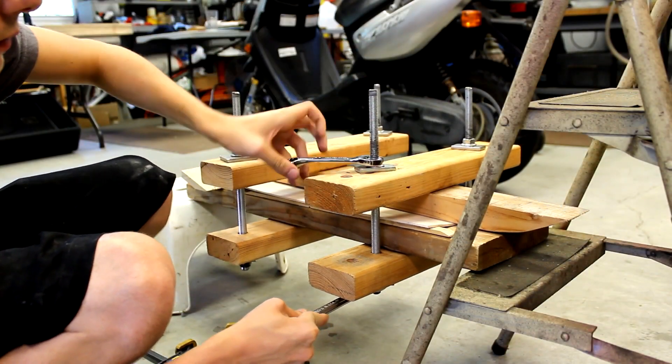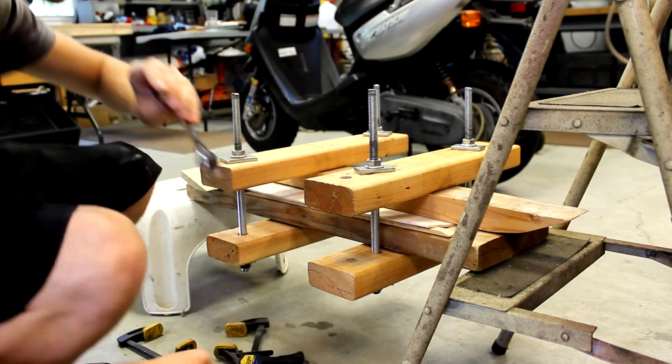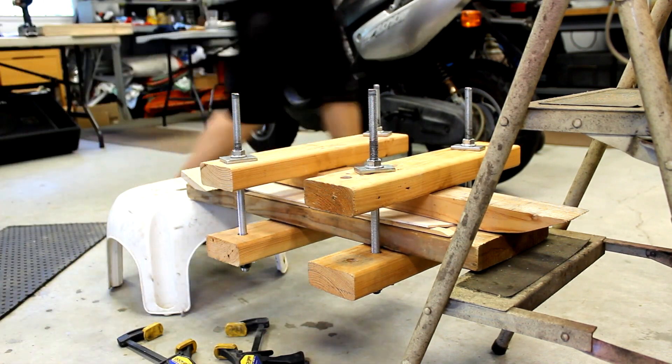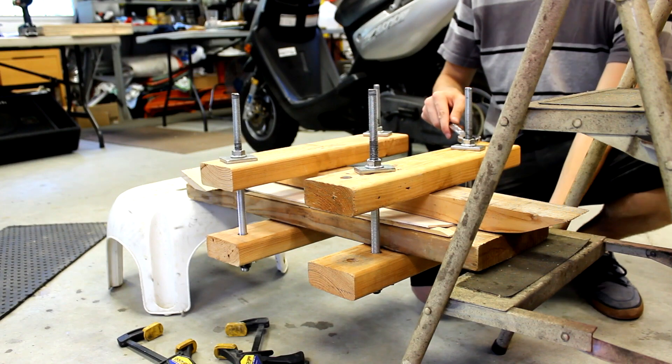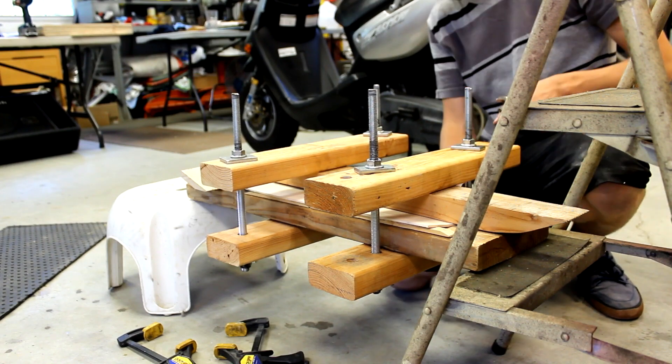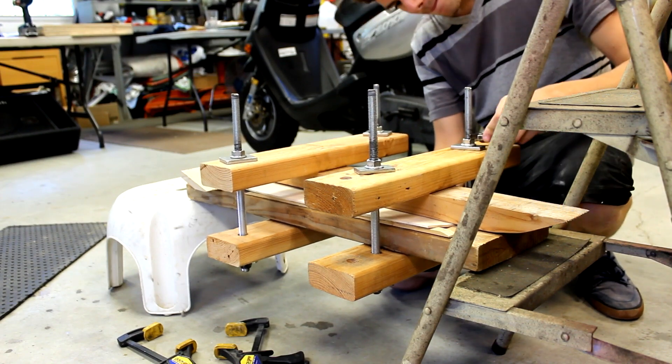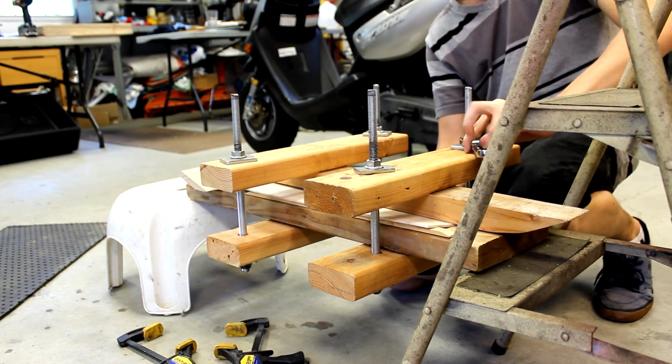To give your board its concave and kicktails, all you have to do is evenly tighten down the nuts and your board will take its shape. Making a press that uses this style of clamp actually allows for a surprising amount of pressure, so you can get lots of concave and nice kicktails on your boards.